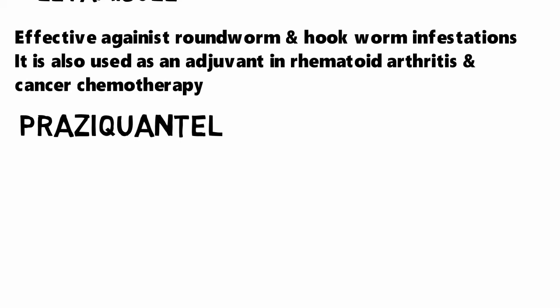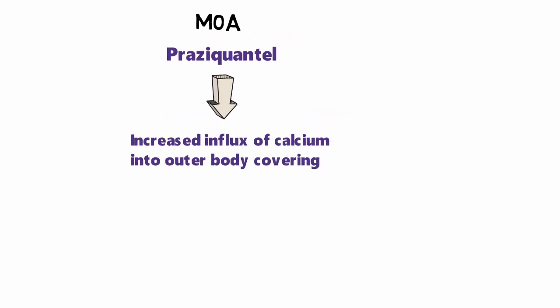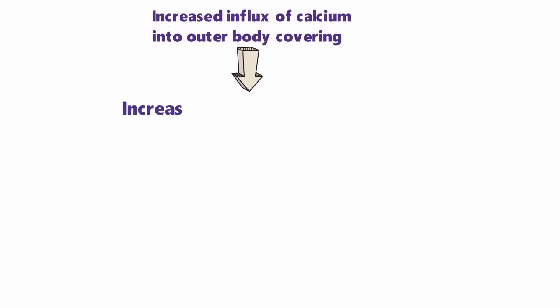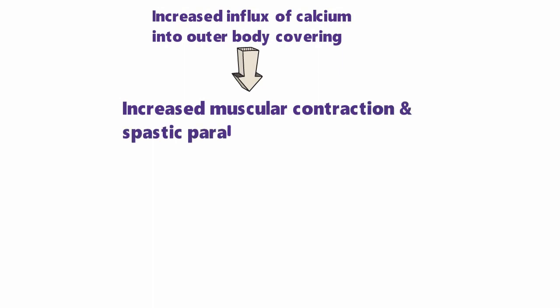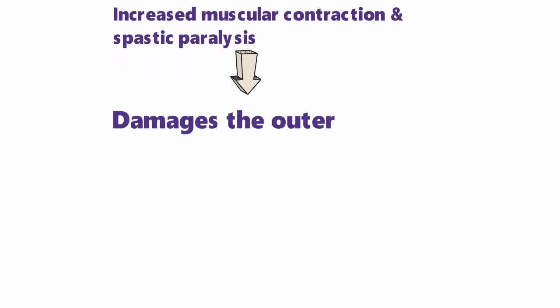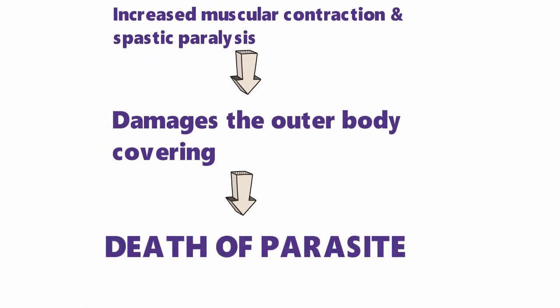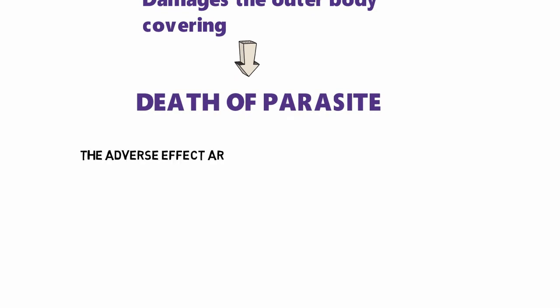The next drug is praziquantel, used for the treatment of trematodes and cestodes, but not for nematodes. The mechanism of action of praziquantel is that after administration, it increases the influx of calcium into the outer body covering of the worms, resulting in increased muscular contraction and spastic paralysis of the worms, which further results in damage to the outer body covering of the parasite. The adverse effects are similar to other anti-helminthic drugs.